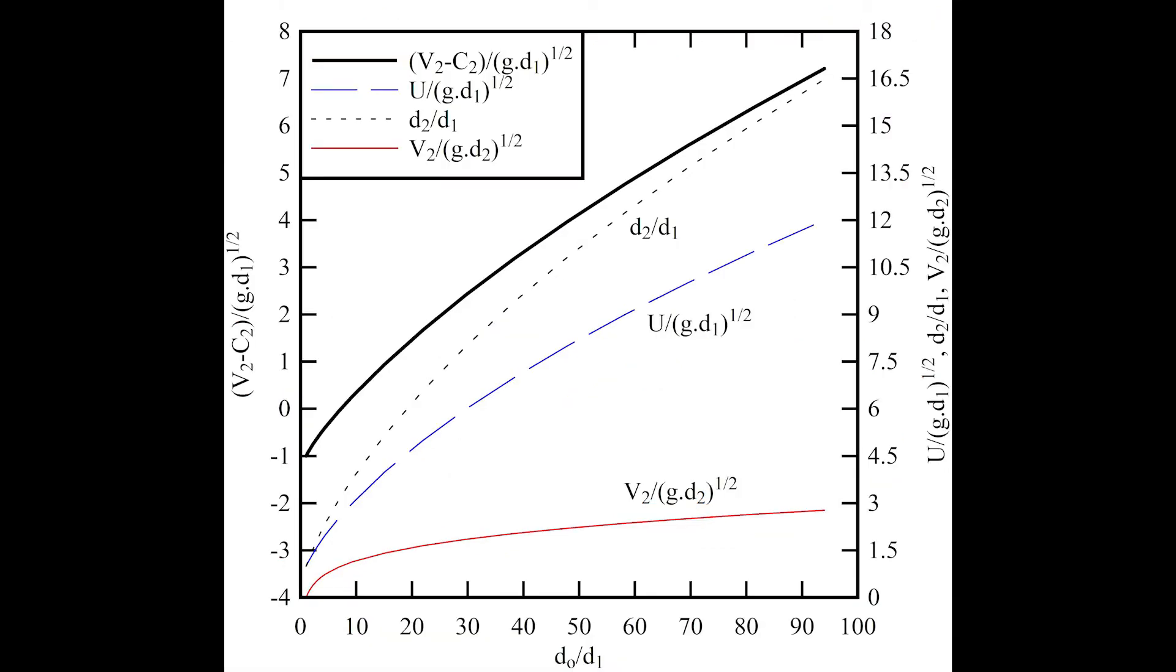This graph presents a graphical representation of the theoretical solution as a function of the ratio of the reservoir height, D0, to the initial water depth in the canal, D1.